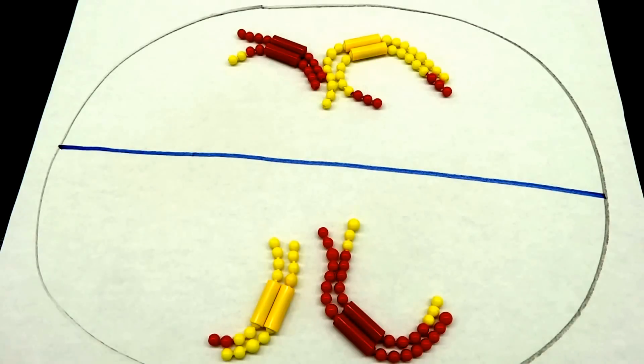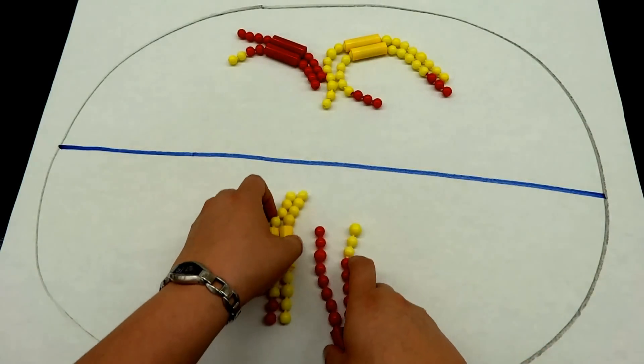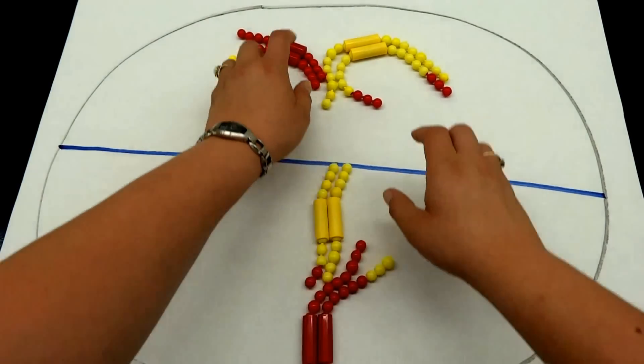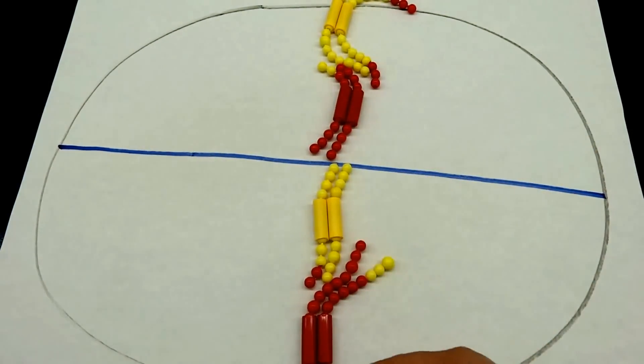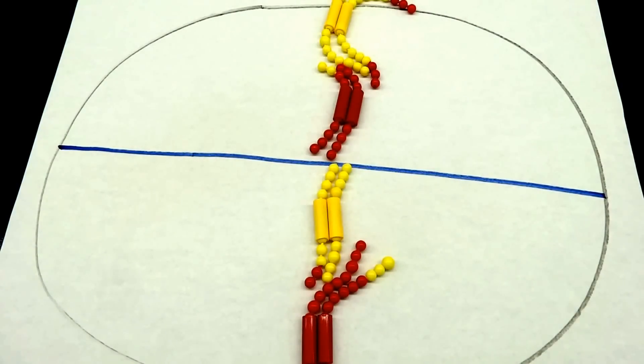As we move into metaphase two, we're going to see our sister chromatids line up along our metaphase plate. Here our metaphase plate is going to run right down the middle and we see that these line up very similarly to how they lined up during mitosis. Our sister chromatids are going to line up end to end in both cell one and in cell two.